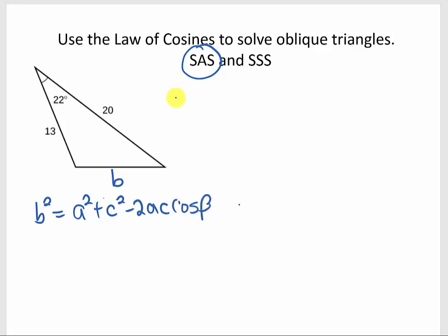So that's what I'm going to use. I'll have b squared equals 13 squared plus 20 squared minus 2 times 13 times 20 times the cosine of the angle between those two sides, which is 22 degrees.